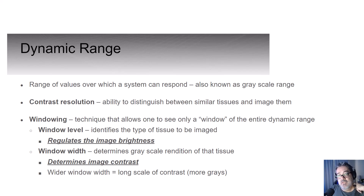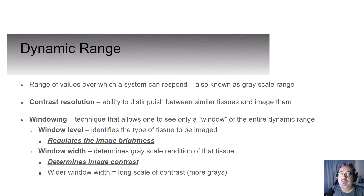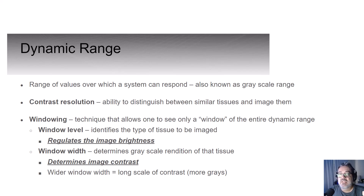Let's talk a little more about dynamic range. This is the range of values over which a system can respond, also known as the grayscale range. This includes hardware like the monitor and the computer, and it also includes the software. Contrast resolution is the ability to distinguish between similar tissues. The computer's ability to enhance visualization and tissue differences is going to be so much greater if you're providing it with optimum technique in the initial data set. When people say they're just going to window an image, they mean they only want to see a window or a portion of the entire dynamic range.